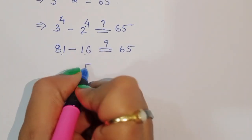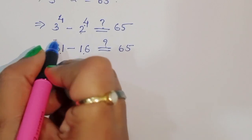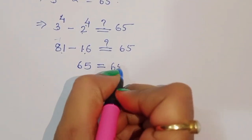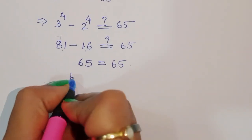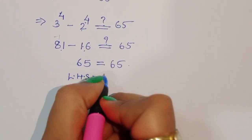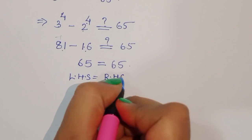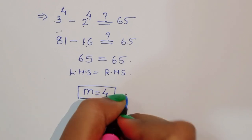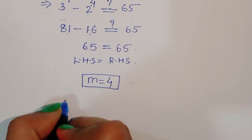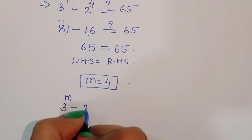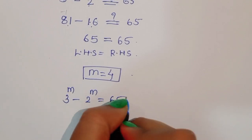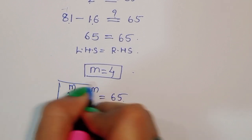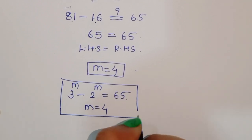So we can say: for 3 power m minus 2 power m equals 65, the value of m equals 4. This is the correct solution. Thank you.